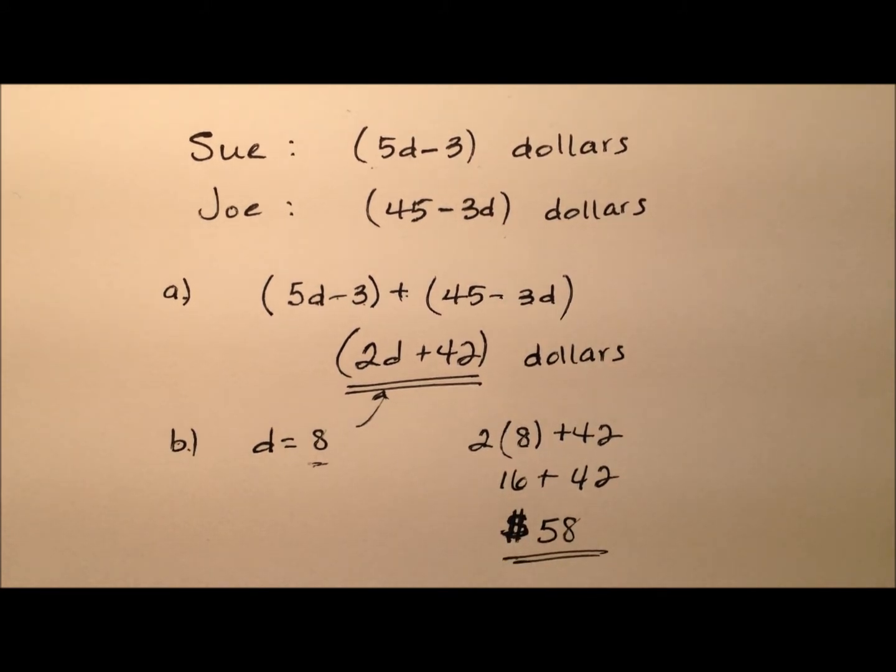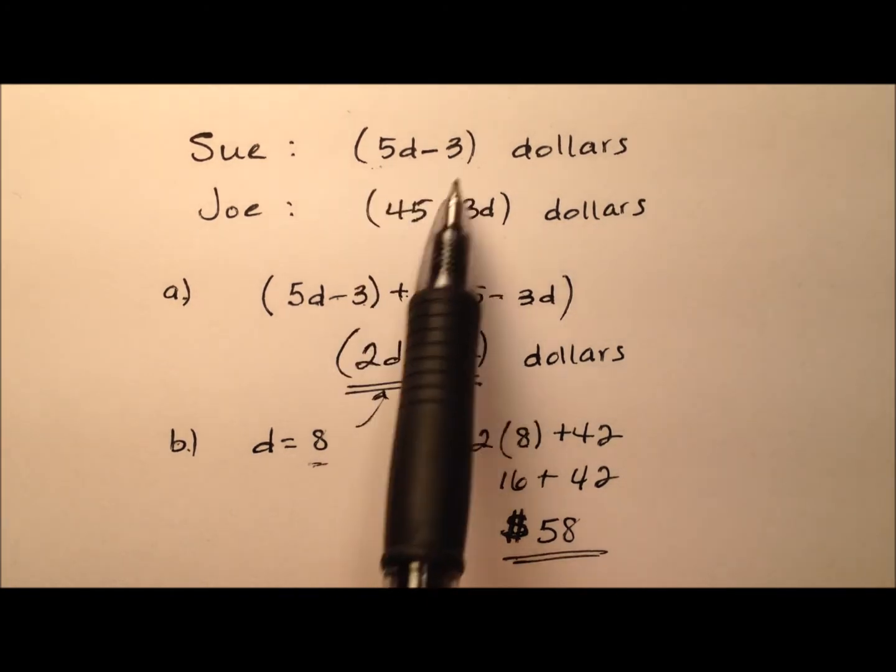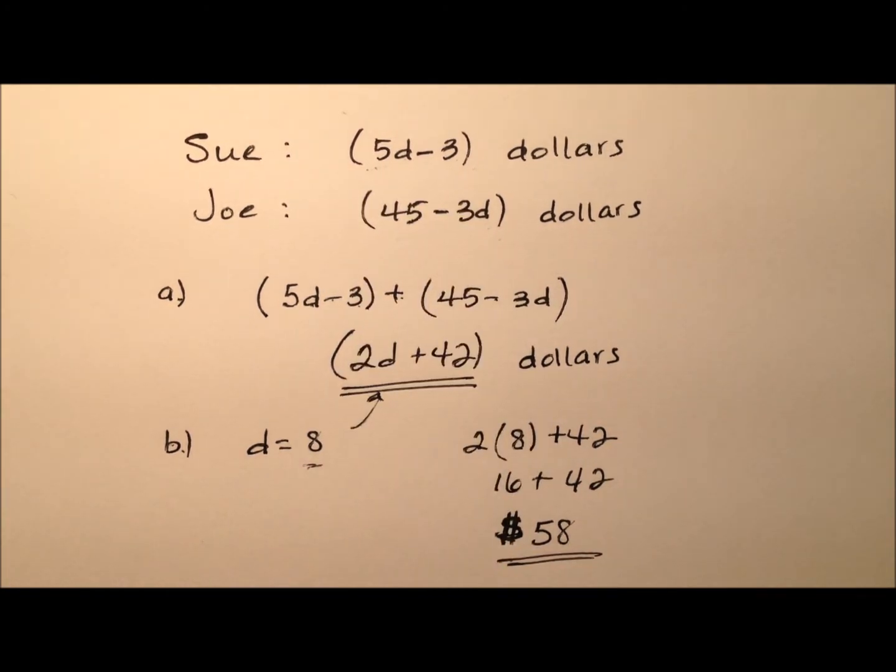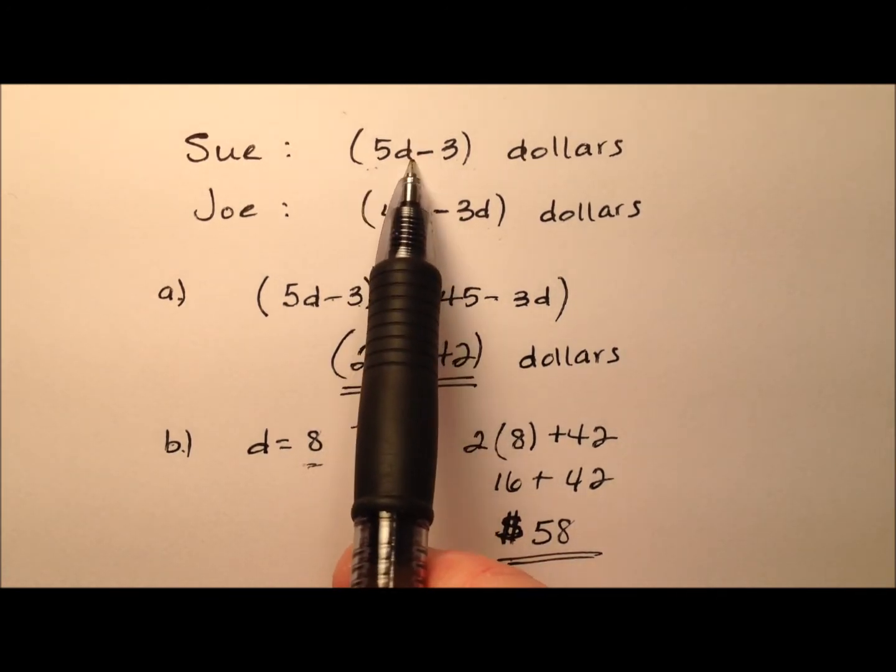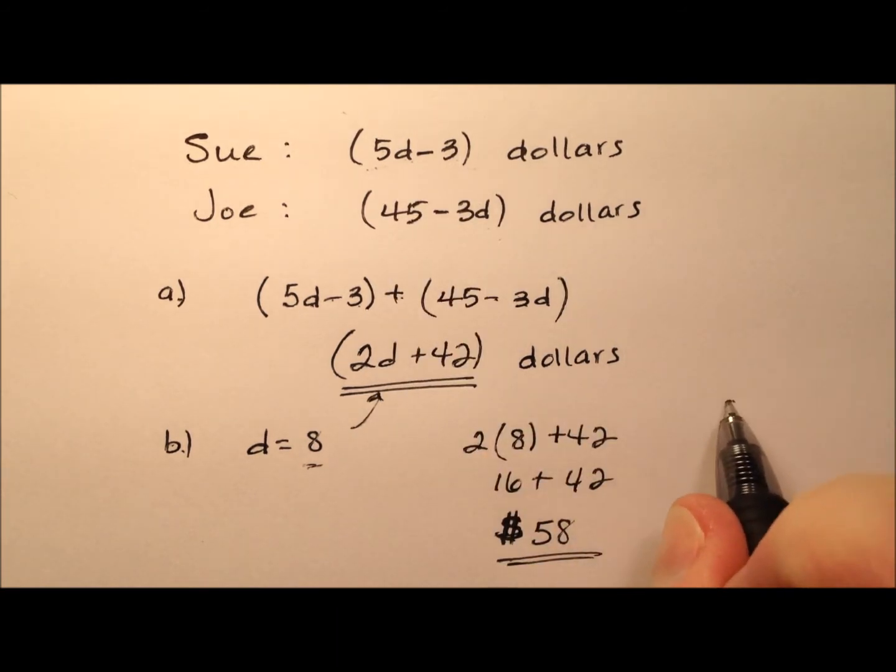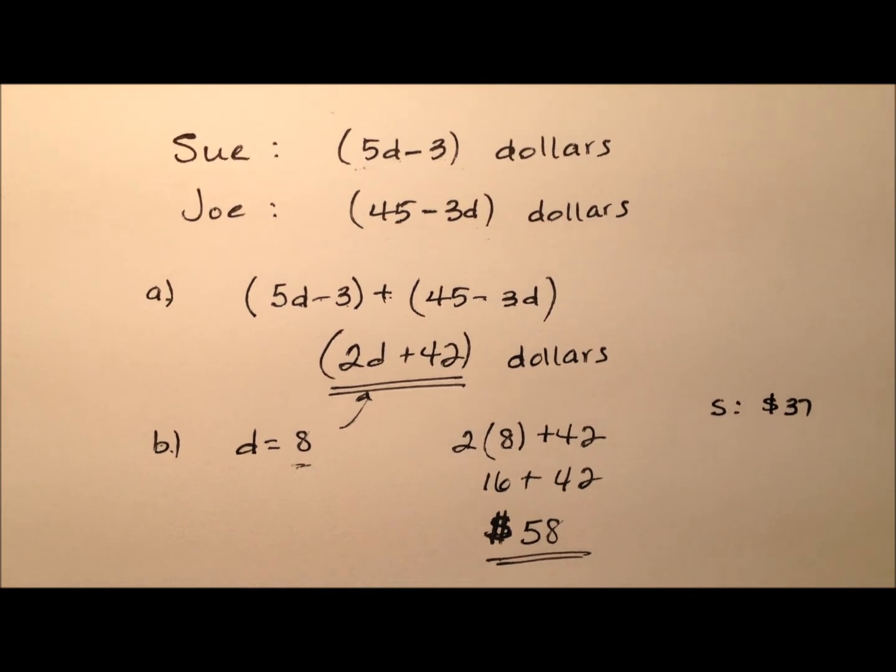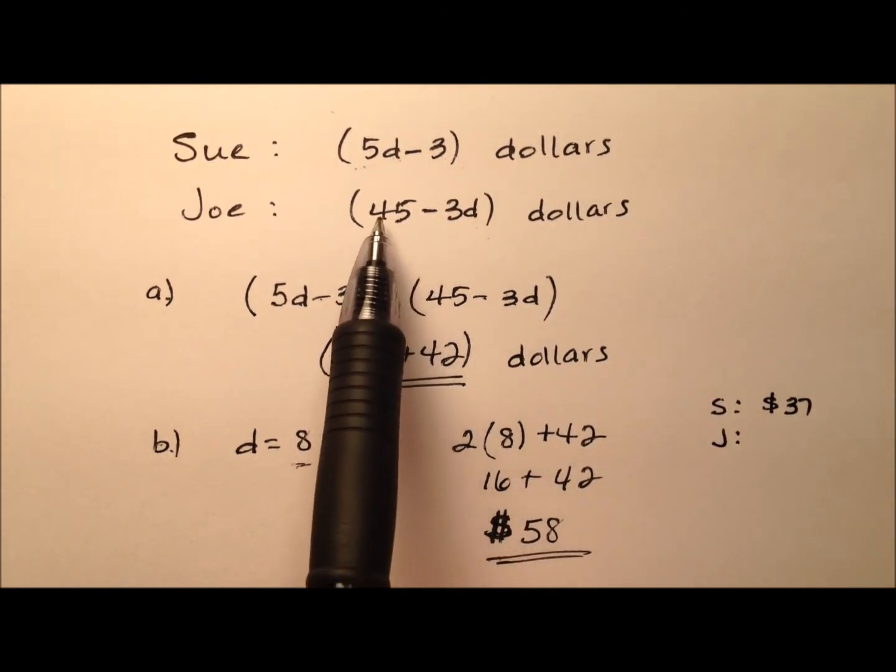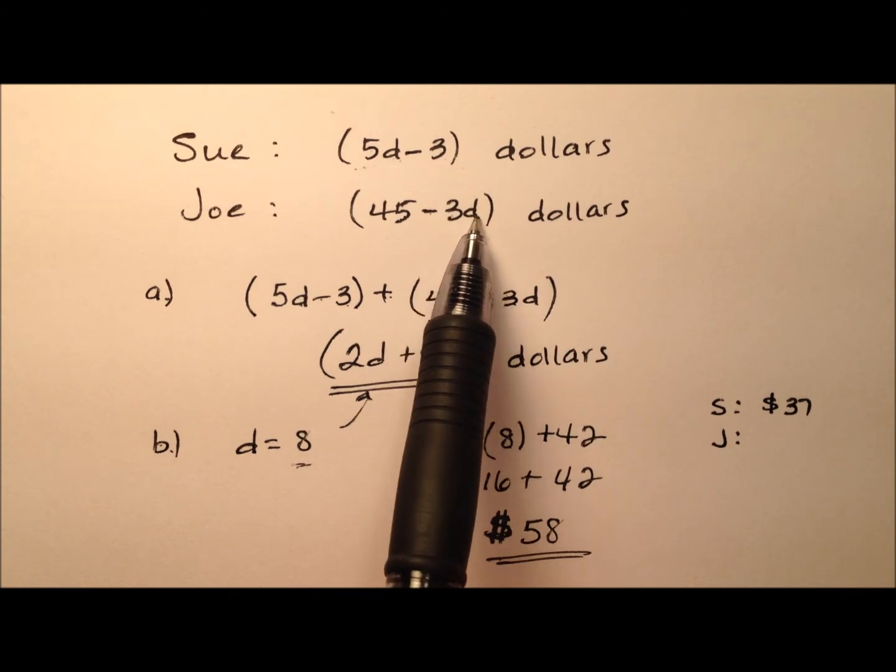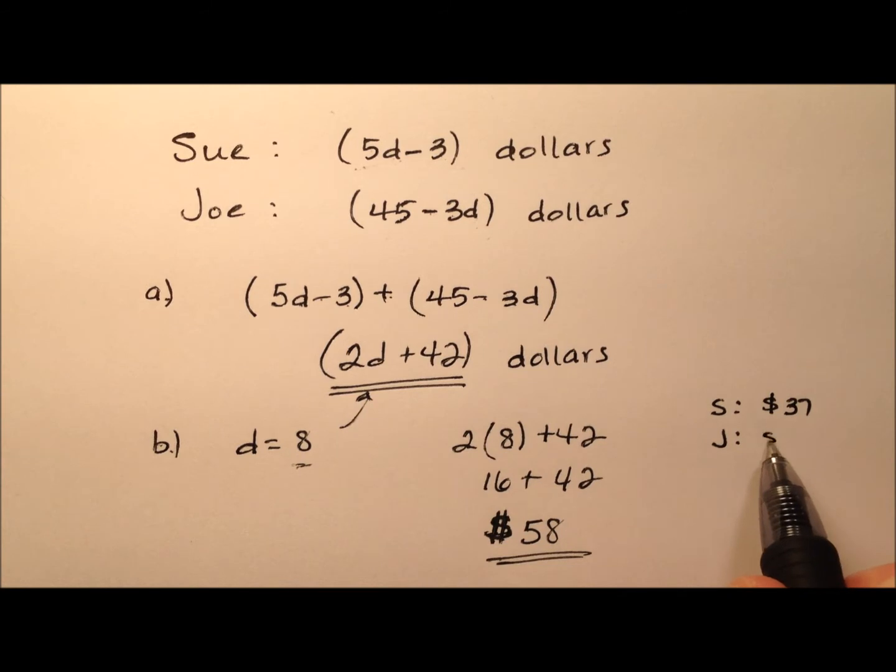Let's plug that 8 in for just Sue and just Joe to see how much they had separately. For Sue, 5 times 8 is 40 minus 3, which is 37 dollars. For Joe, 45 minus 3 times 8 is 45 minus 24, which is 21. Together, that's 58 dollars.